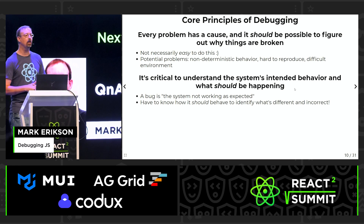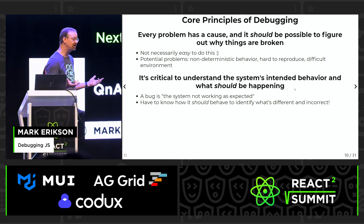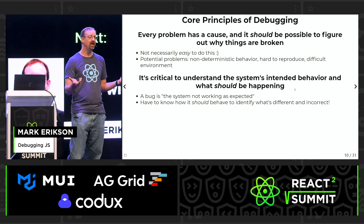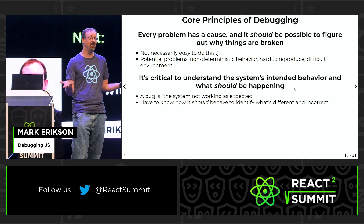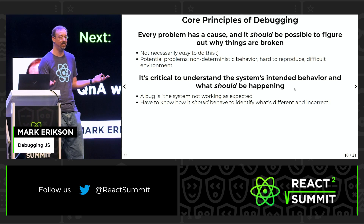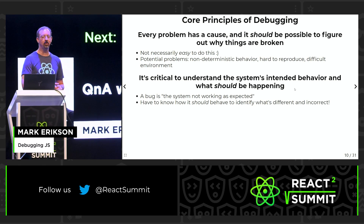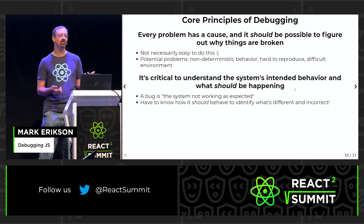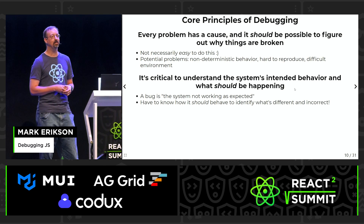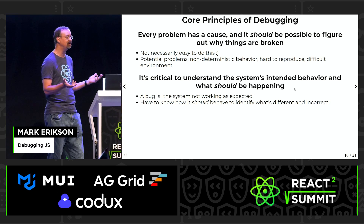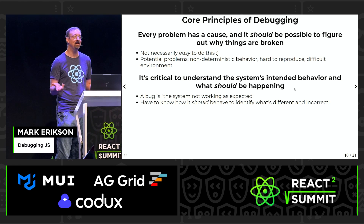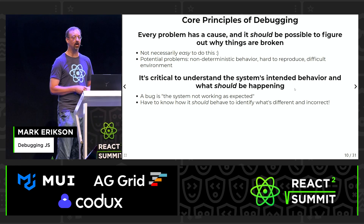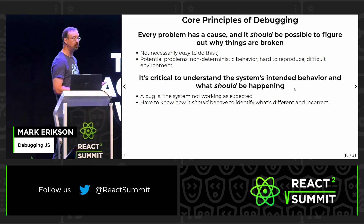Let's look at some core principles of debugging. The title of the talk is debugging JavaScript, but these principles are universal — you can apply them to any language, and frankly you can apply them outside of programming as well. The first is that every problem has a cause and a reason, and it should be possible to figure out why this thing is broken. Just because there is a cause doesn't mean it's going to be easy to figure out, and there's a lot of things that can make that more complicated, but it is possible.